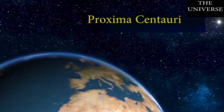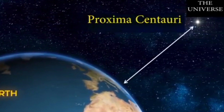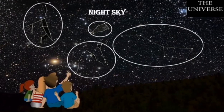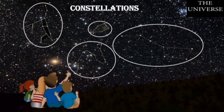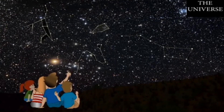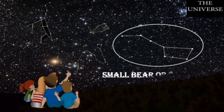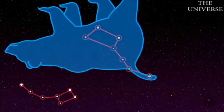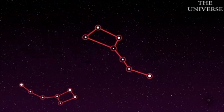Proxima Centauri is the second nearest star to the Earth after the Sun. In ancient times, navigators used to determine direction with the help of the Pole Star — it is the brightest star that remains in the same position in the sky. In the sky you may also notice various patterns formed by different groups of stars; these are called constellations. One of the easily recognizable constellations is Ursa Major, also known as the Great Bear or Sapta Rishi, where 'sapta' means seven and 'rishi' means sages. The constellation Ursa Major is visible in the northern hemisphere all year long.